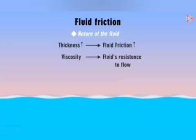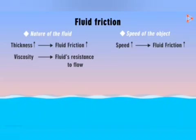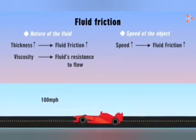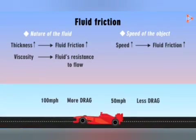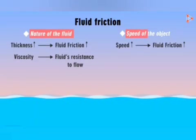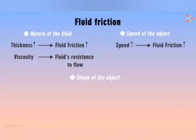Another factor affecting fluid friction is the speed with which the object is traveling. The higher the speed of the object moving through a fluid, the greater the frictional force acting on it. A vehicle traveling at 100 miles per hour will face more air drag compared to a similar vehicle traveling at 50 miles per hour. Apart from the nature of the fluid and speed, fluid friction also depends on the shape of the object, and it's really important that we understand this factor.